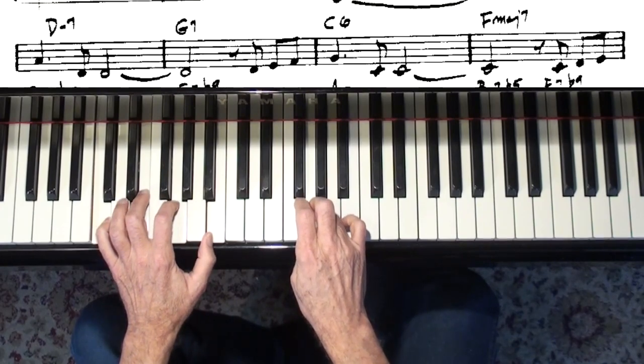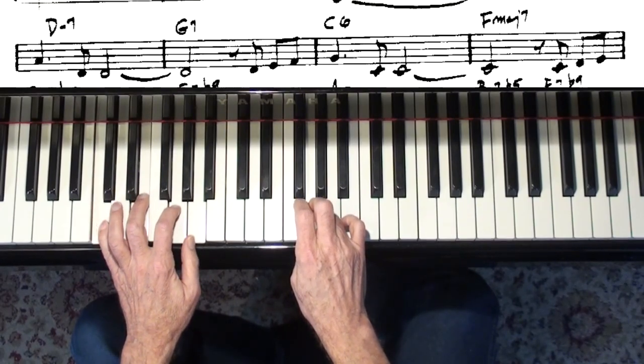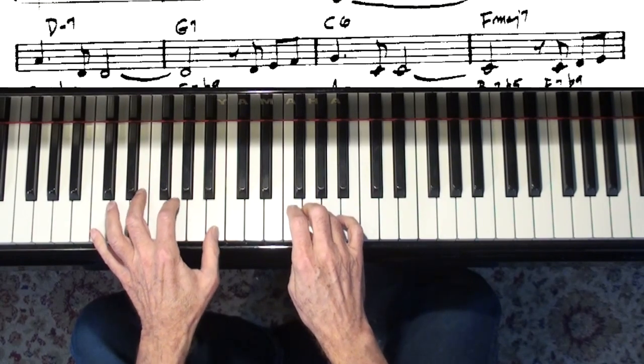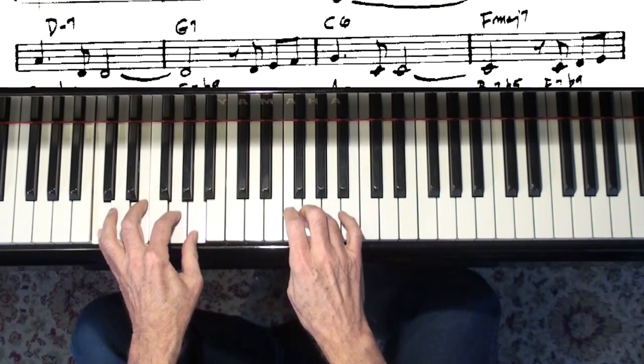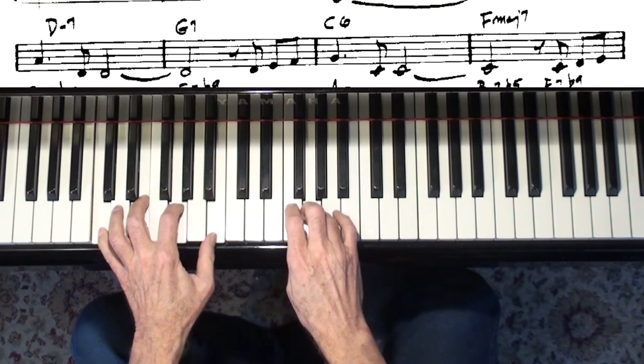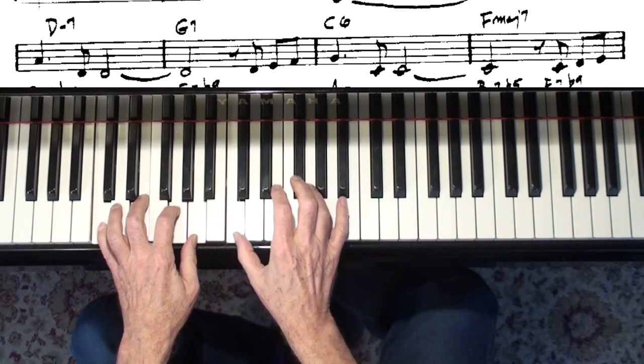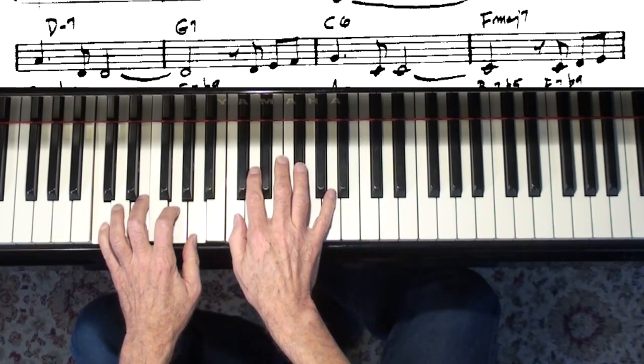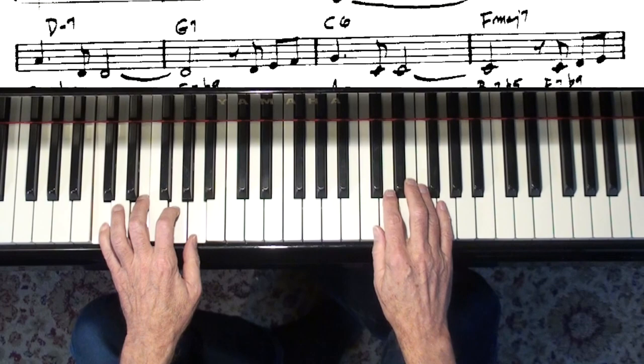Now, I played C major seventh. The book says C sixth. Either one sounds good, and they're very closely related chords. All right? They both have the same kind of flavor. There, I did them both. And now we're going to F. And see, my right hand is too low, you know, so I should be playing up here for now.